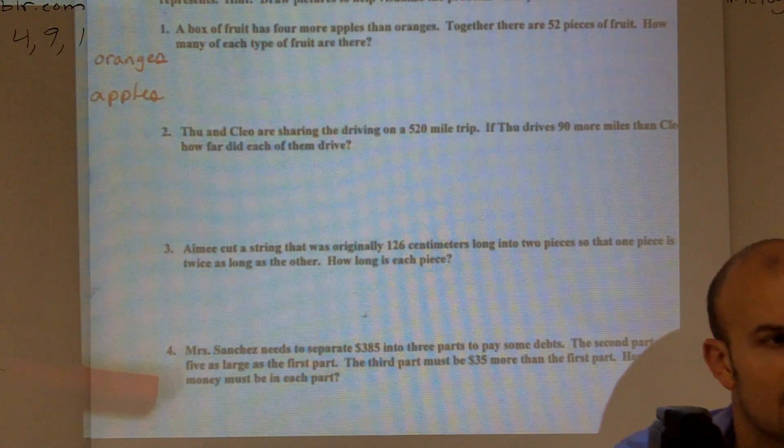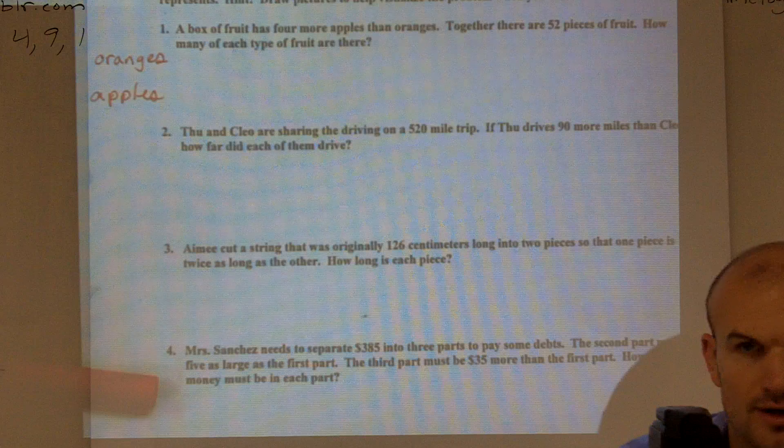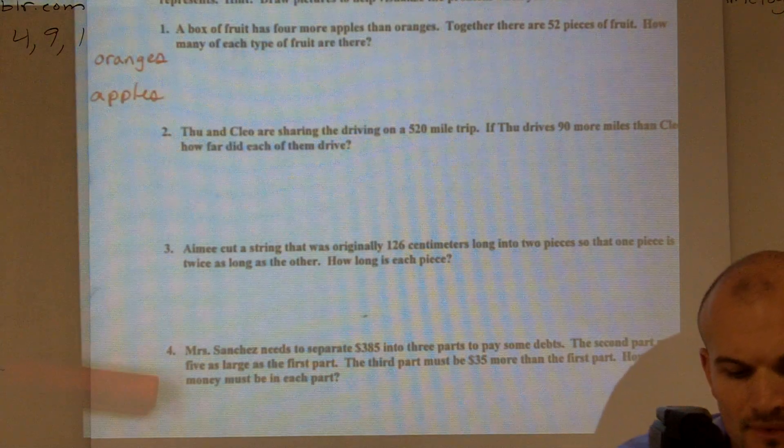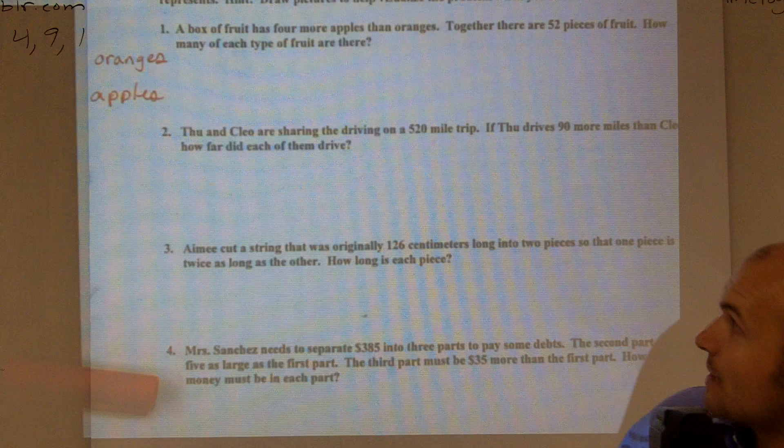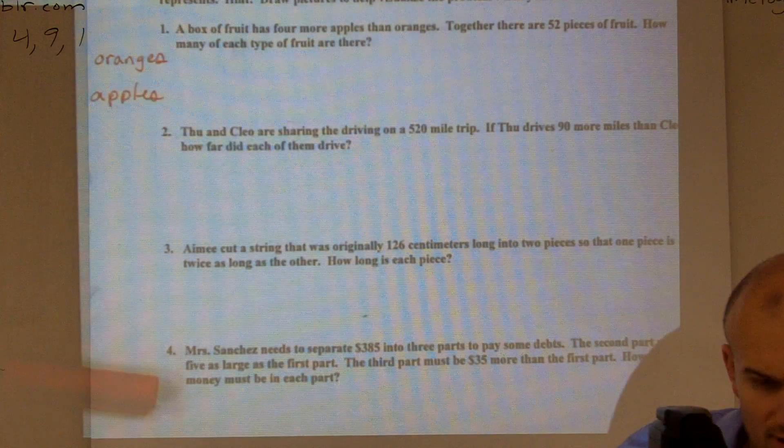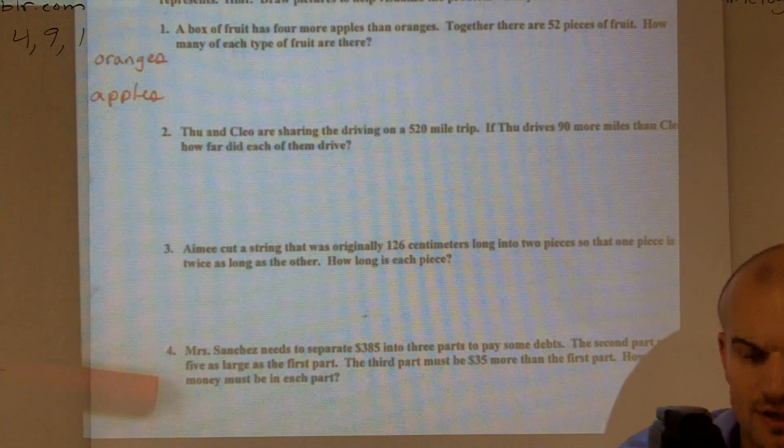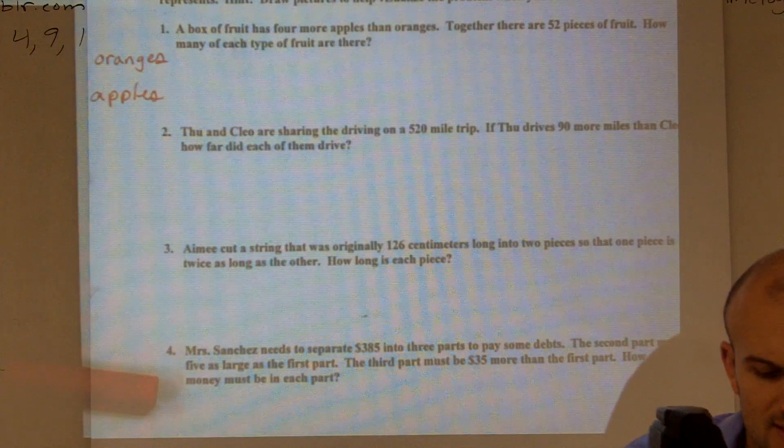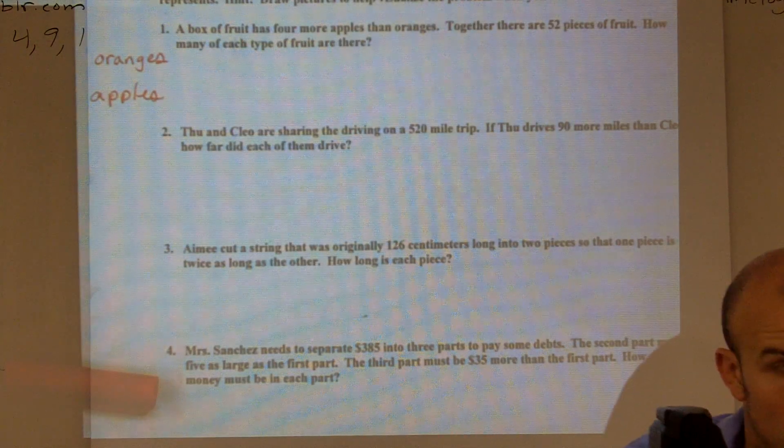Now, it's usually when we're talking about variables, we can assign an x and a y or an o and an a to represent how many they have. However, we're really trying to practice and it shows in the definition that we're only working with one variable. So we need to pick a variable and determine which one is our variable going to represent, either oranges or apples.